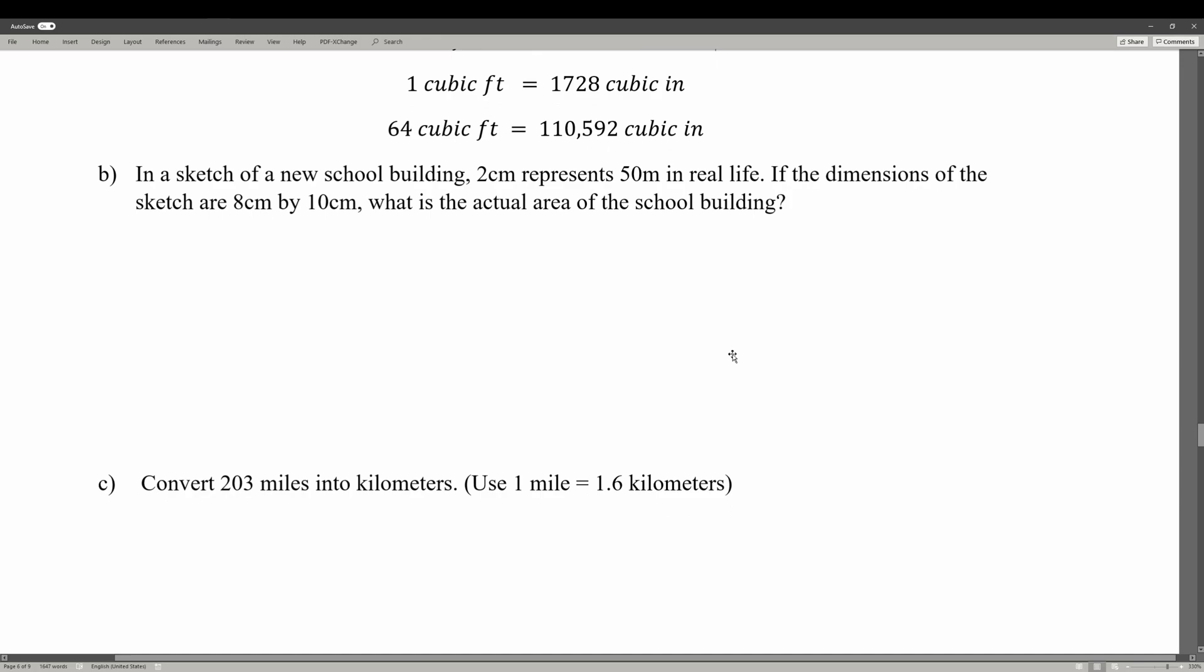In a sketch of a new school building, 2 centimeters represents 50 meters in real life. If the dimensions of the sketch are 8 centimeters by 10 centimeters, what is the actual area of the school building? This time we're talking about square meters. We set up a proportion: 2 centimeters over 50 meters equals 8 centimeters over x meters. We cross-multiply to get 2x equals 400 meters, and x equals 200 meters. So that's just one side of the school building.